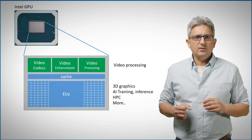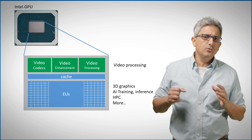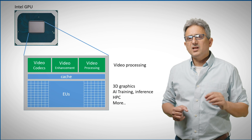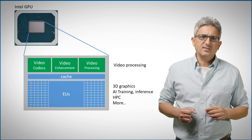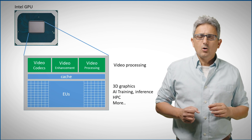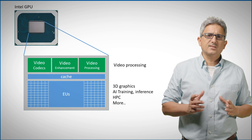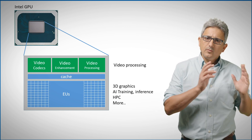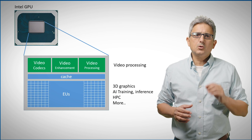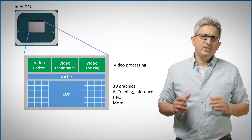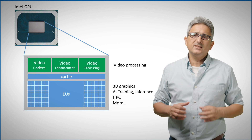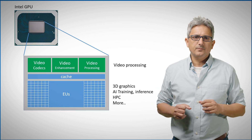Intel GPUs, for example — the integrated or the new discrete ones — have dedicated fixed functions to accelerate video processing. So OneVPL can not only help you offload all your video processing, which is a very heavy task, but it will also allow you to squeeze in more video channels and do more processing work on the GPU than the CPU can sometimes handle.